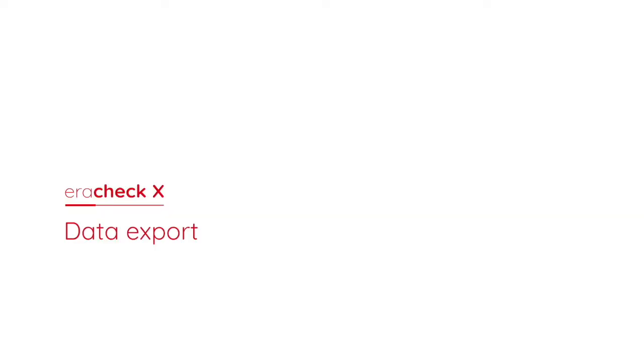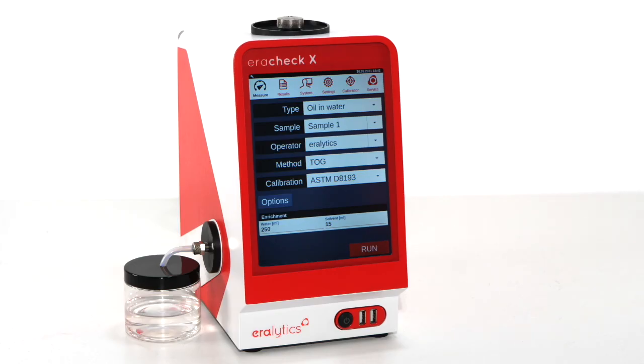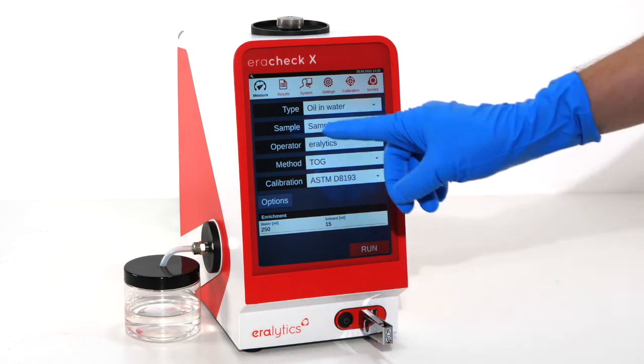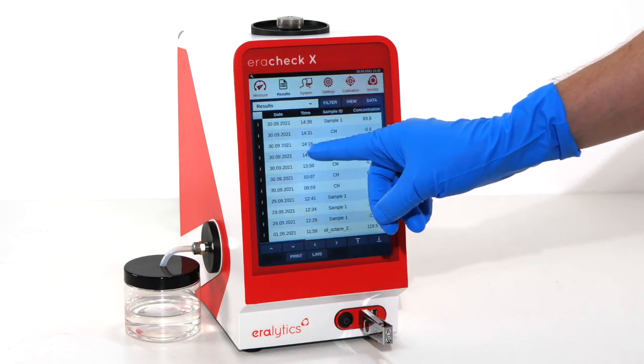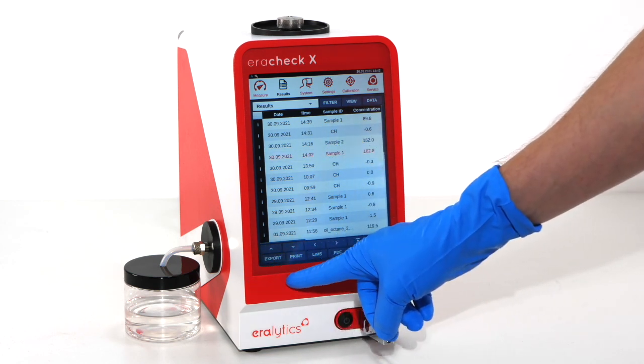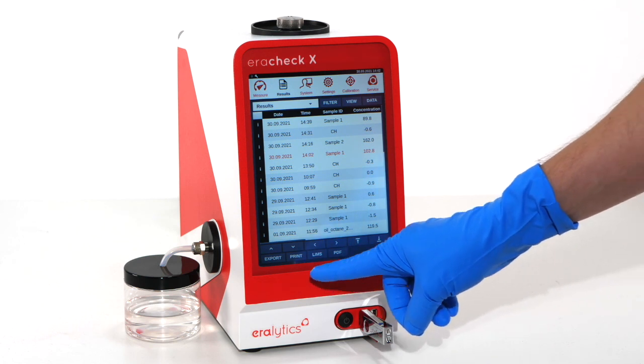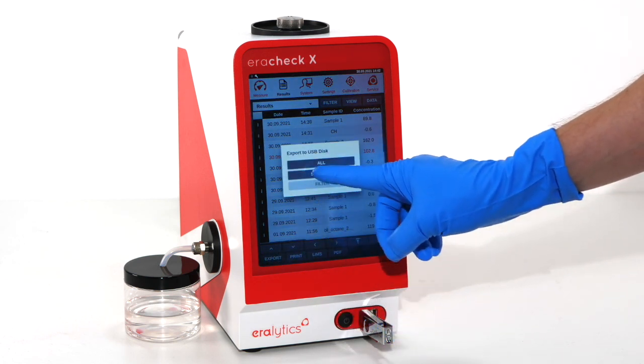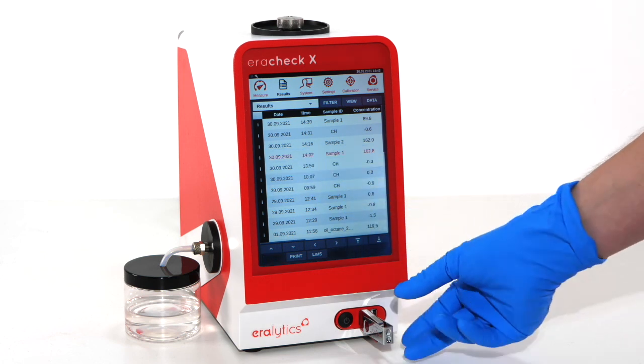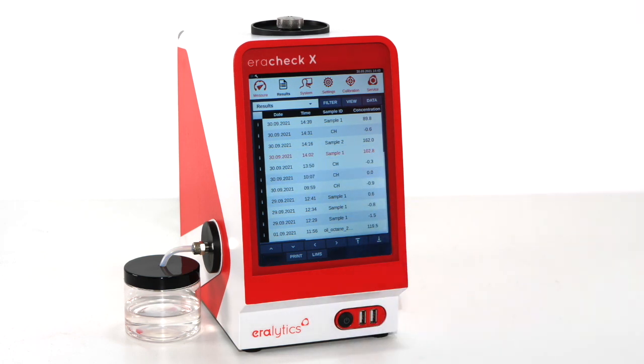Data export. Connect a USB drive to the analyzer. Select your measurement in the result menu. Press the corresponding button for the following options: Export the data as TXT, CSV or PDF to the USB drive. Print the result with a connected printer or transfer the data directly to a LIMS via Ethernet connection.